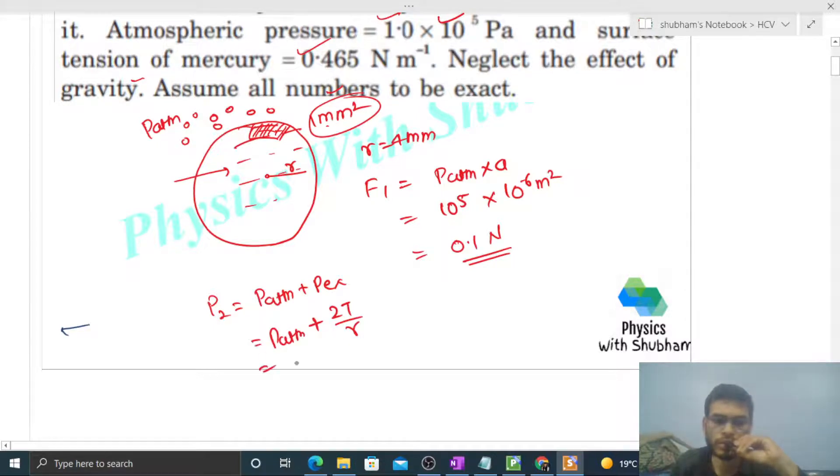Just put the values. Atmospheric pressure 10⁵ plus 2 into surface tension 0.465 divided by radius that is 4 × 10⁻³. Again you have to keep in mind SI units. This 2 cancels and this 3 goes up, so it becomes like this.